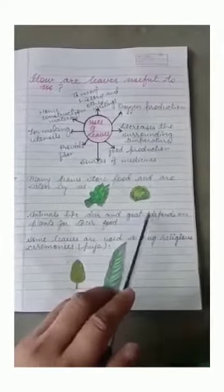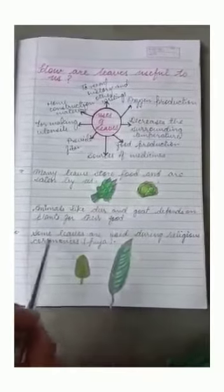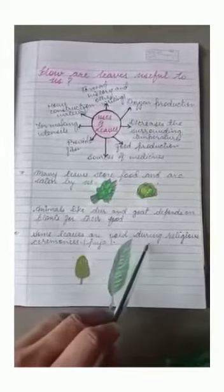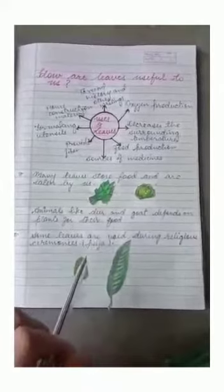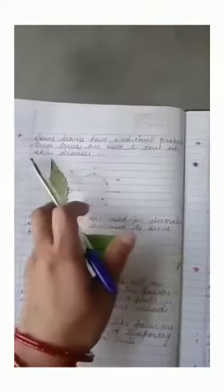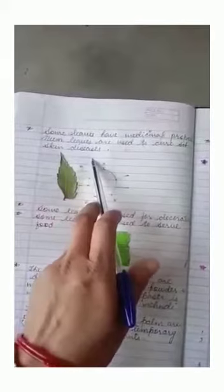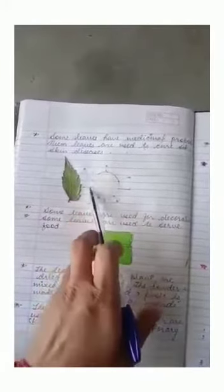Some leaves are used during religious ceremonies like puja, for example tulsi, mango, banana. Some leaves have medicinal properties. Neem leaves are used to cure skin diseases and tulsi leaves are used to cure cough and cold.